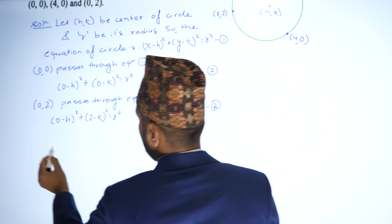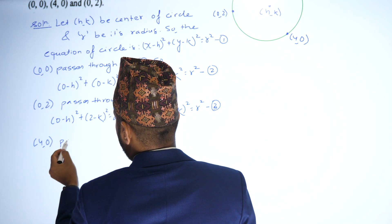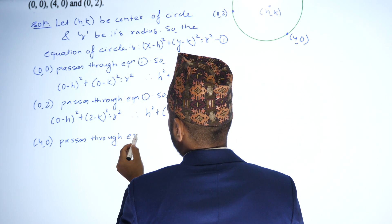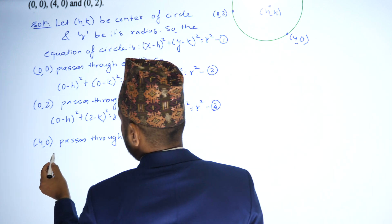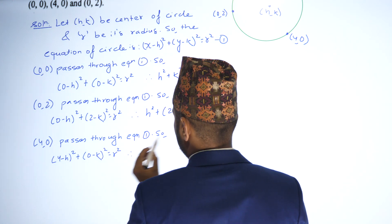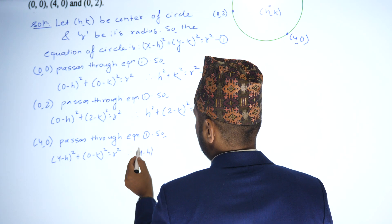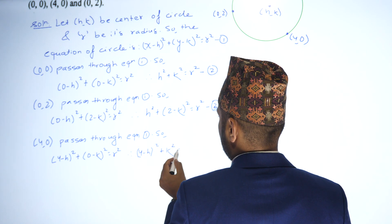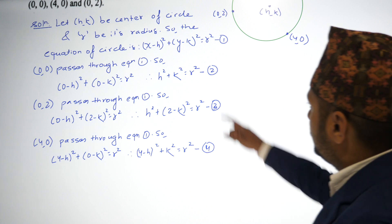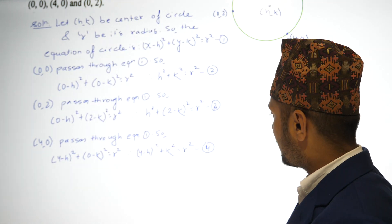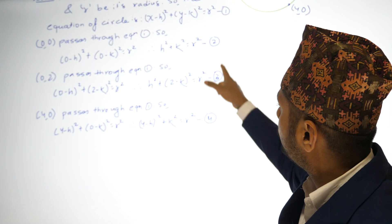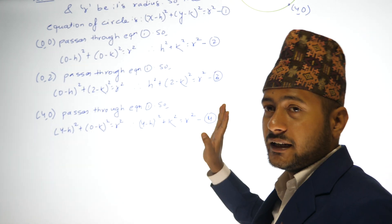Point (4,0) passes through equation 1, so (4 minus h) squared plus (0 minus k) squared equals r squared, therefore (4 minus h) squared plus k squared equals r squared. To find the values of h, k, and r, we subtract equation 2 from equation 3, and subtract equation 2 from equation 4.